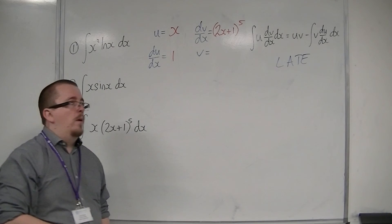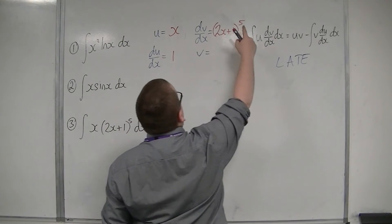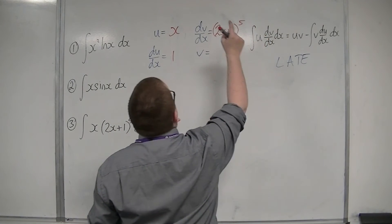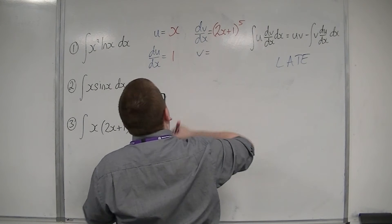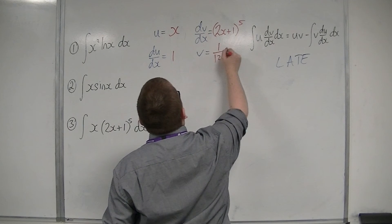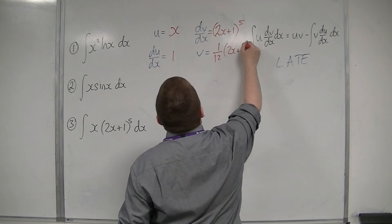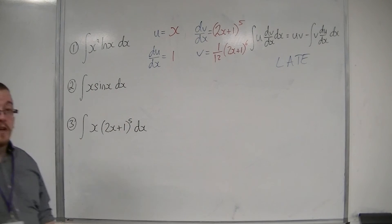Then we've got to integrate 2x plus 1 to the 5. So we've got to use some reverse chain rule on it. So add 1 to the power gets 6. 6, 2 times 2 is 12. So I'd have 1 twelfth, 2x plus 1 to the 6. So that's using reverse chain rule.